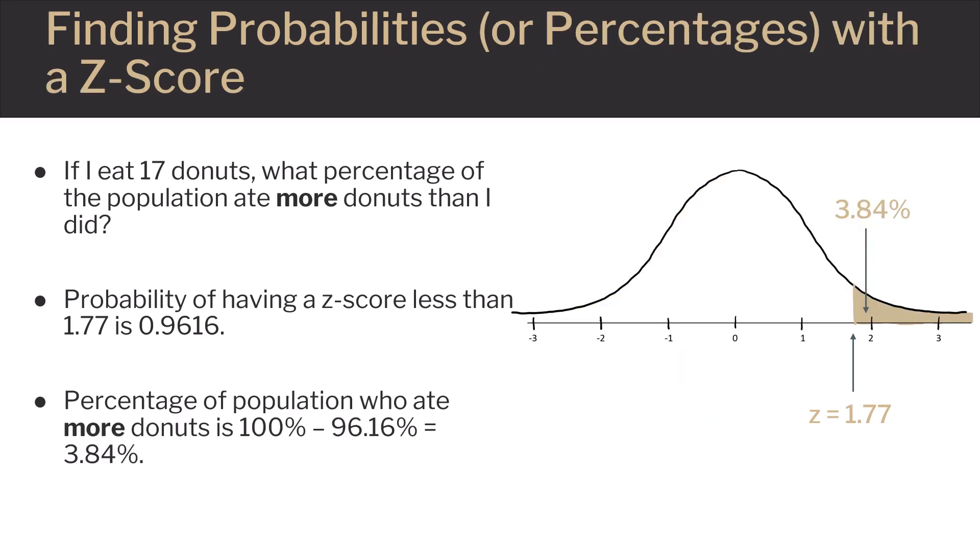Alternatively, if I eat 17 donuts, what percentage of the population ate more donuts than I did? The probability of having a Z-score less than 1.77 is 0.9616, which was to the left of 1.77 in the normal distribution curve.